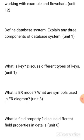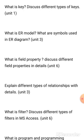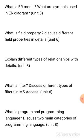Also from Chapter 1: what is a key — discuss different types of keys. From Chapter 3: what is an ER model and what are the symbols used in an ER diagram? Also from Chapter 3: explain different types of relationships in detail. From Chapter 6: what is a field property — discuss different field properties in detail. Also from Chapter 6: what is a filter — discuss different types of filters in MSSS. From Chapter 8: what is a program and programming language — discuss two main categories of programming languages.